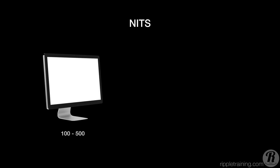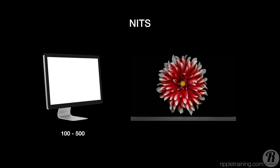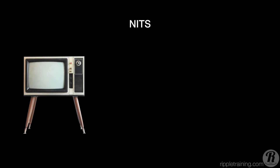A typical modern computer screen has a brightness value of about 100 to 500 nits. But modern flat panel LED and OLED TVs are now able to display brightness values up to 1,000 nits, adding three to four additional stops of dynamic range. Good old-fashioned cathode ray tube televisions had a limit of 100 nits of brightness.